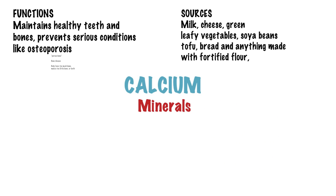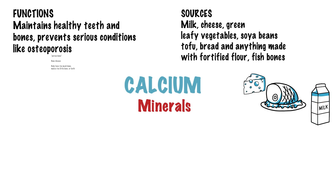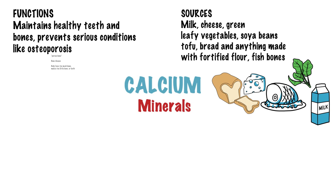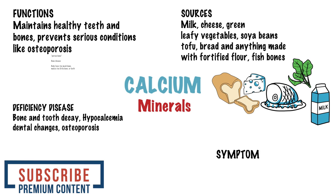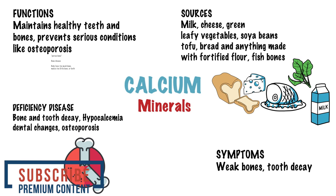Sources of calcium are plenty. We have milk, cheese and other dairy foods. Green leafy vegetables such as broccoli, cabbage and okra — but not spinach, which is not a good source of calcium. Soya beans, soya drinks with added calcium, nuts, bread and anything made with fortified flour. Fish such as sardines and pilchards are also good sources of calcium. Diseases associated with deficiency of calcium include bone and tooth decay. Hypocalcemia is a condition that occurs when calcium levels in the blood are low. Long-term deficiency can lead to dental changes, cataracts and even alterations in the brain. Osteoporosis also causes bones to become brittle and very fragile, with symptoms including weak bones and tooth decay.